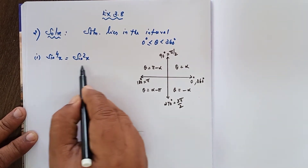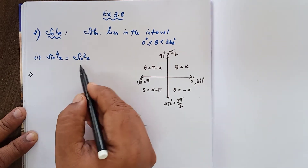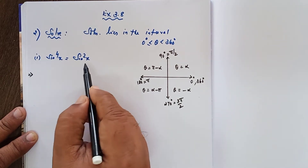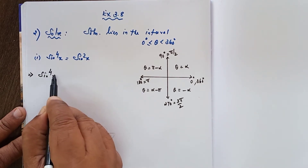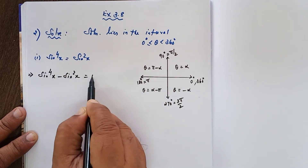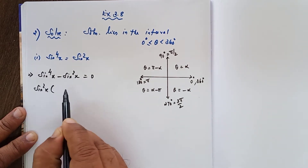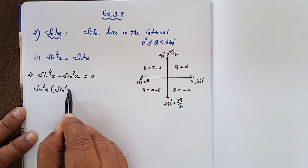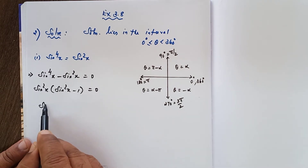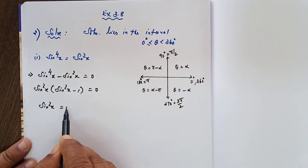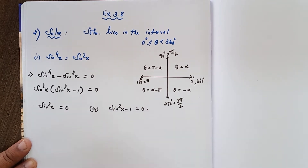sin⁴x equals sin²x. You are not supposed to cancel sin²x here because x is a solution — it should be taken to the left-hand side. So: sin⁴x minus sin²x equals 0. Now take sin²x as common; you will get sin²x times (sin²x minus 1) equals 0. Product of these two equal to 0 means either sin²x equals 0 or sin²x minus 1 equals 0.